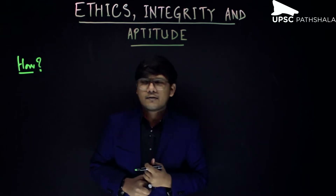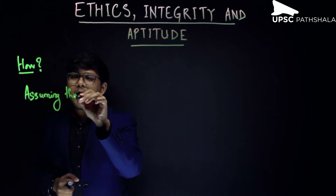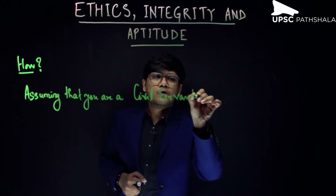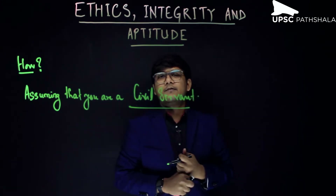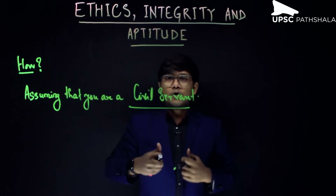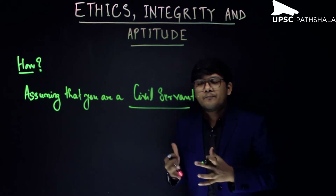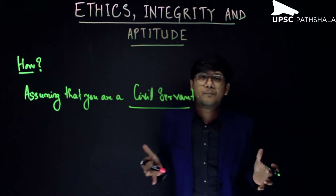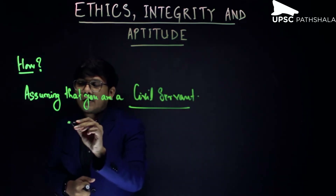The simple answer is: write assuming that you are a civil servant. This is the trick — whenever you write an answer to the ethics paper, assume that you are a civil servant and then answer the question. When you do that, various things will happen: you will not be biased, you will follow a procedure especially in case studies, you will have a governance perspective, and you will think from an unbiased standpoint trying to do the best for as many people as possible.